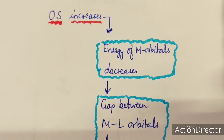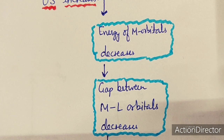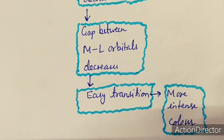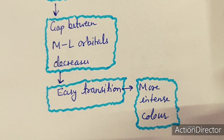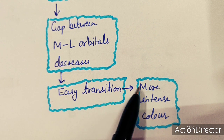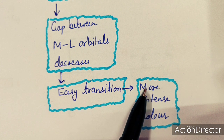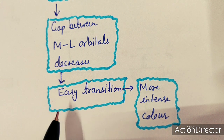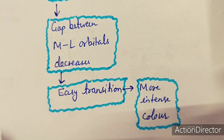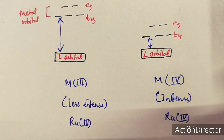Due to the decrease in energy of metal orbitals, the gap between metal and ligand orbitals also decreases. When this gap decreases, transitions become easier, and the color of the complex will be more intense. This is how the oxidation state of the metal affects the intensity of charge transfer transitions.